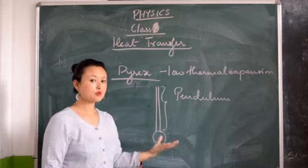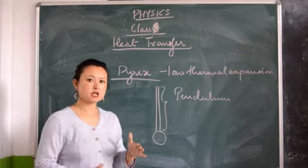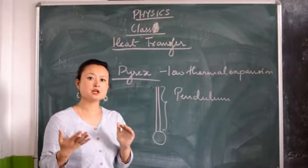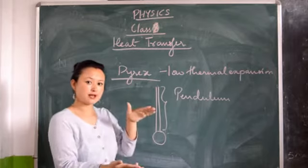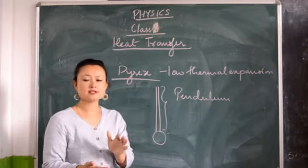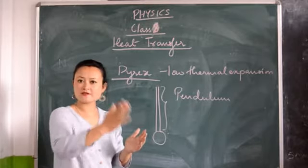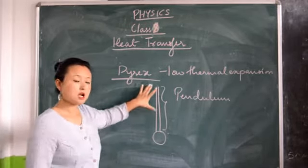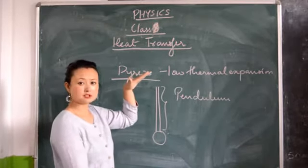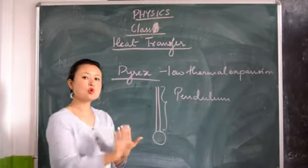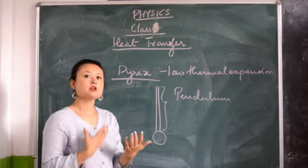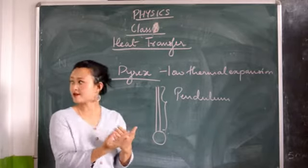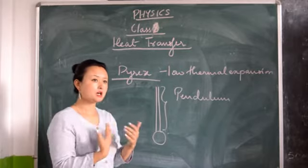During winter, it's just the opposite. The metal contracts because of the cold, so the length of the pendulum becomes shorter. When it becomes shorter, it oscillates faster. So the time period will be shorter during winter.